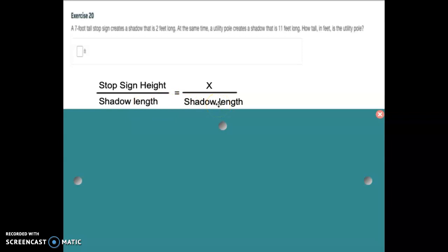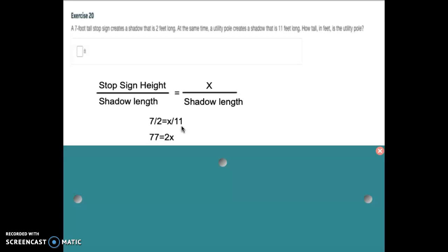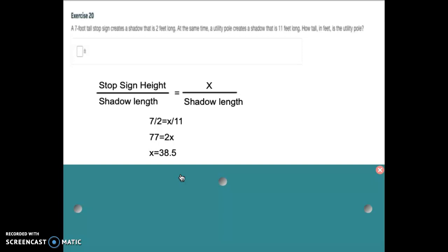So now I just need to plug my numbers in. So I get 7 over 2 is equal to X over 11. If I cross multiply, I get 77 is equal to 2X. And when I divide that out, I get X equals 38.5. So the height of the utility pole using our shadow lengths and the height of one known thing is going to be 38.5 feet.